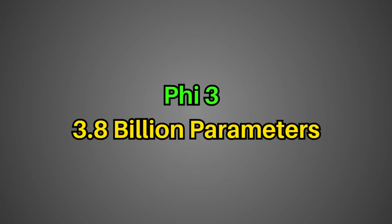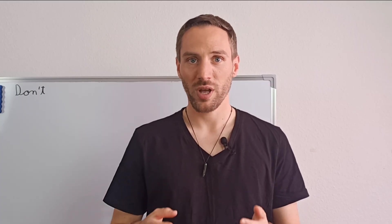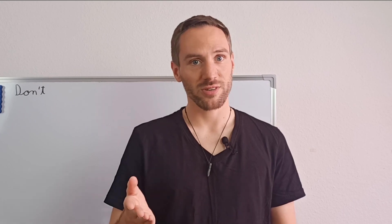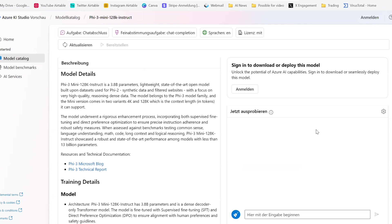I already mentioned Phi-3 from Microsoft. And with 3.8 billion parameters, it is relatively small, yet surprisingly powerful. And you can test it if you want. So let's head over.